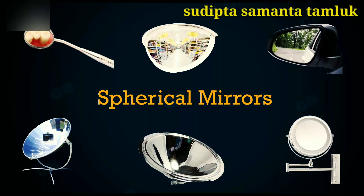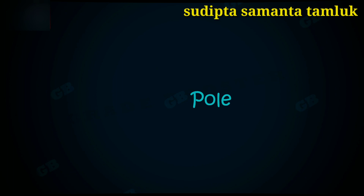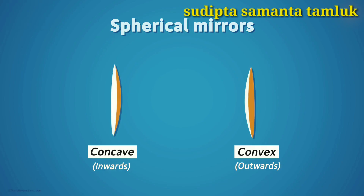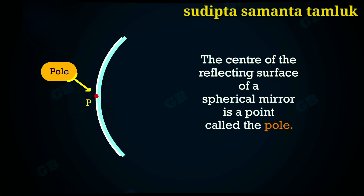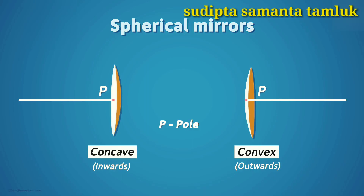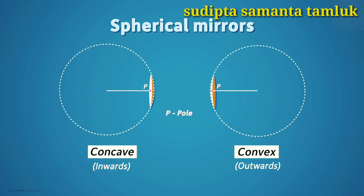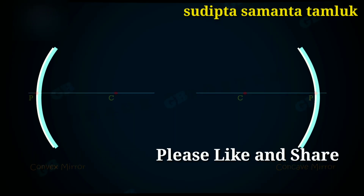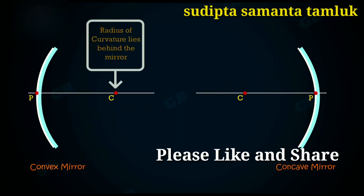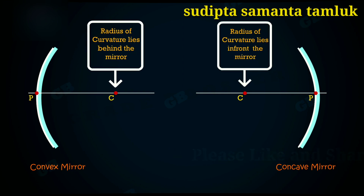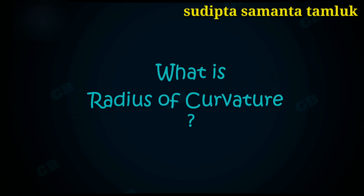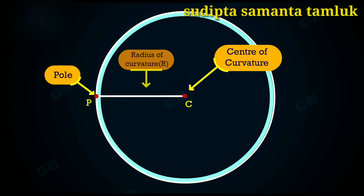We need to know the meaning of certain terms. First: pole. The center of the reflecting surface of the mirror is called the pole, denoted by the letter P. Center of curvature: the reflecting surface forms a section of a sphere, and the center of that sphere is called the center of curvature, denoted by C. The center of curvature of a convex mirror lies behind it, whereas it lies in front of the mirror in the case of a concave mirror. Radius of curvature: the radius of the sphere of which the reflecting surface forms a part is called the radius of curvature, represented by R.